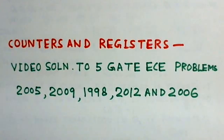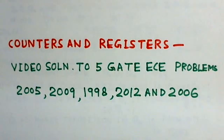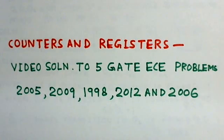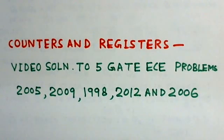This problem set is on the topic of counters and registers, within the main topic of sequential circuits. It presents video solutions to five GATE EC problems from the years 2005, 2009, 1998, 2012, and 2006. The problems have been selected to ensure that most subtopics are covered, and they are arranged in order of their subtopics rather than by year.